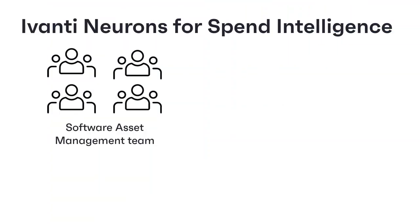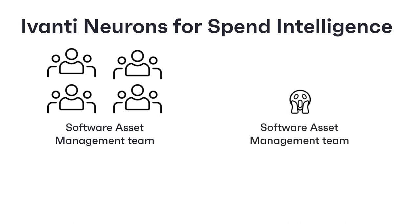Software asset management can be complicated. Some organizations have an entire department of highly skilled people looking after their software assets, whereas others have only one overworked individual who's feeling a little bit daunted and is desperately trying to keep on top of things while also dealing with their real job. Ivanti Neurons for Spend Intelligence provides a set of components to help all these people get on top of their software asset management challenges and to save their organization money.